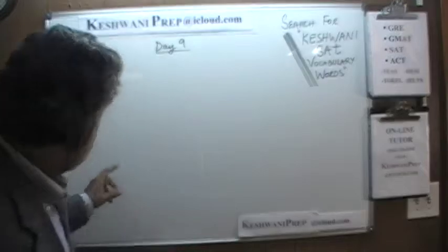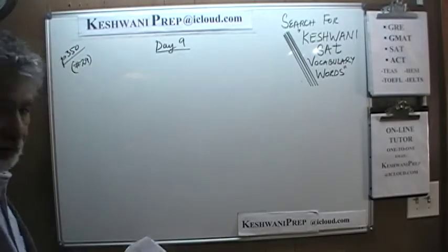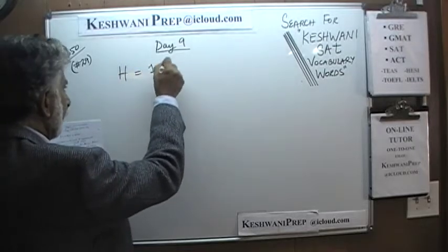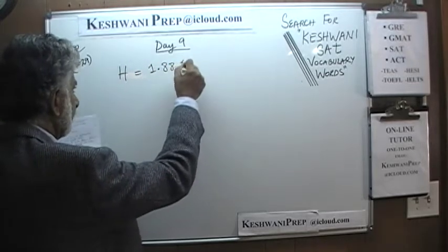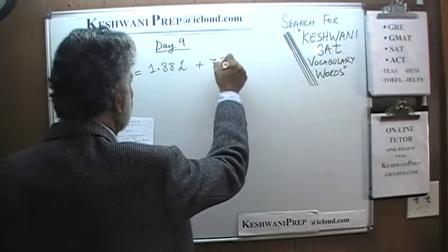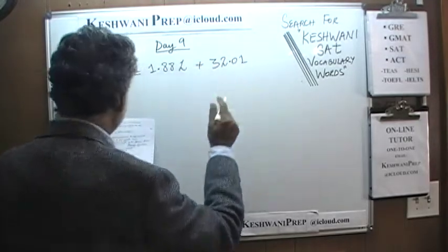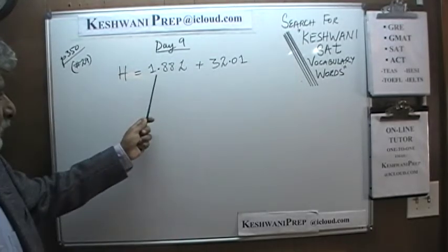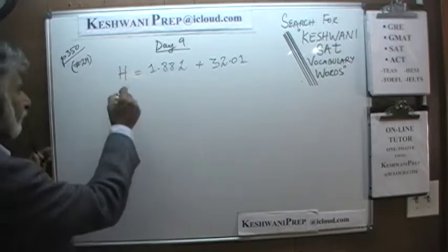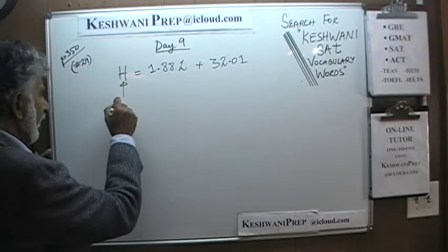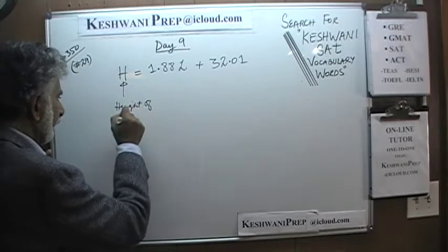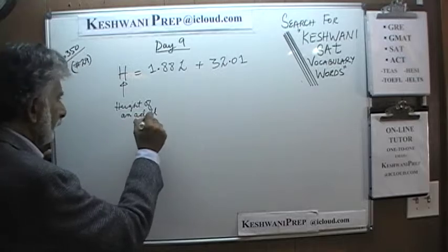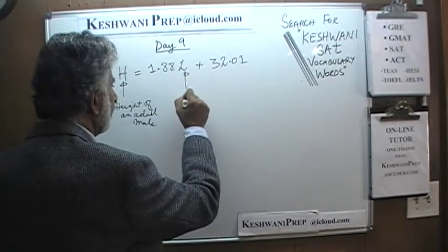Page number 350, number 29. We are given an equation here which looks something like this. We are told that H equals 1.88L plus 32.01. The question simply is, in the context of this equation, what does the number 1.88L signify, if H measures the height of an adult male and L represents the length of his femur.